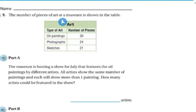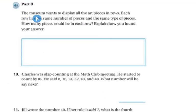The number of pieces at an art museum is shown on the table below. So oil paintings, there's 30, photographs, there's 24, sketches, 21. The museum is hosting a show for July that features the oil paintings by different artists. All the artists show the same number of paintings in each, and each will show more than one painting. How many artists could be featured in the show? 2, 3, 5, 6, 10, or 15 artists. The museum wants to display all the pieces in a row. Each row has the same number of pieces and the same types of pieces. How many pieces could each row have?